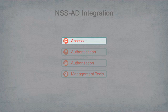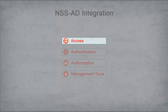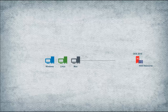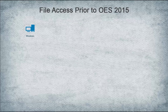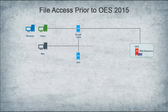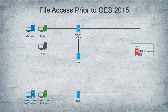Let's begin by comparing NSS access by eDirectory users with access by Active Directory users. OES provides access to NSS resources from Windows, Linux, and Mac clients. For versions prior to OES 2015, Windows and Linux clients access NSS resources using the CIFS protocol, while Mac uses both the CIFS and AFP protocols for file access. Additionally, the Novell Clients for Windows and Linux use the NCP protocol to provide file services.